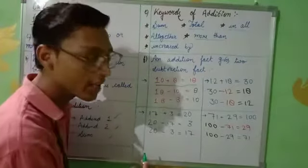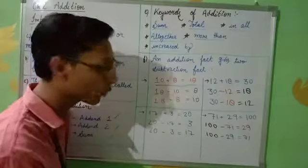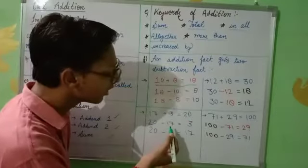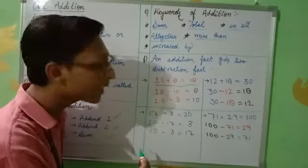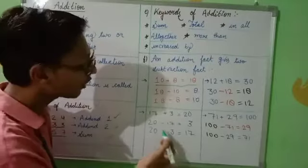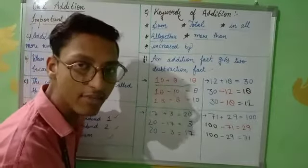Next, we will see one more example. 17 plus 3 equals 20. So when we subtract 17 from 20, we will get 3, and when we subtract 3 from 20, we will get 17.